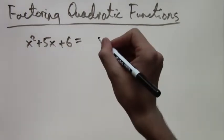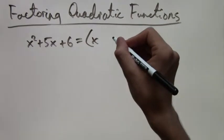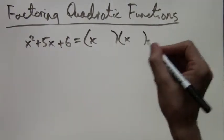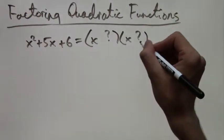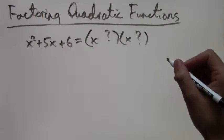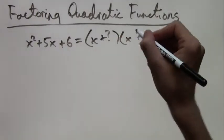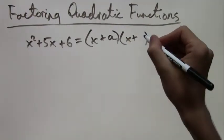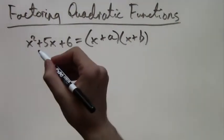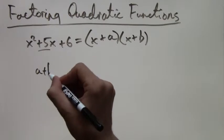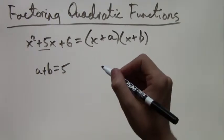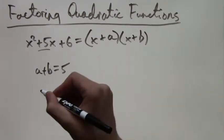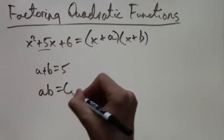Say you have an example like x squared plus 5x plus 6. We're going to factor it. So as before, we're going to have x plus a times x plus b, because we know there are going to be some sort of numbers there. The rule is we have a 5 there, so a plus b equals 5. And we have a 6 as the constant, so a times b equals 6.